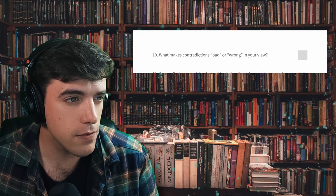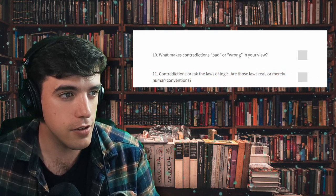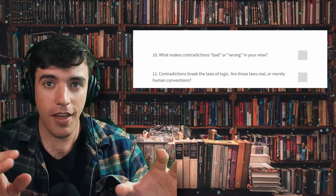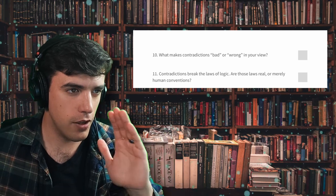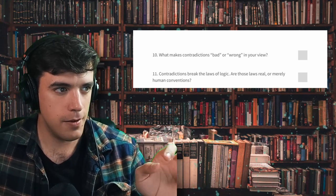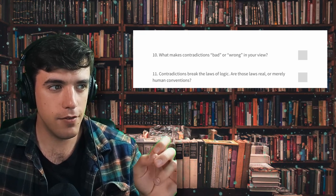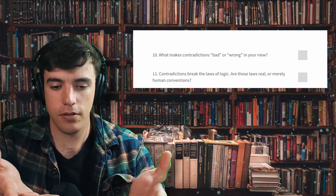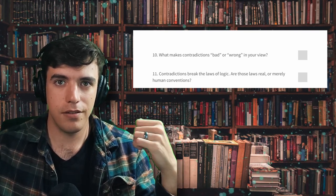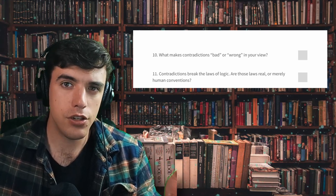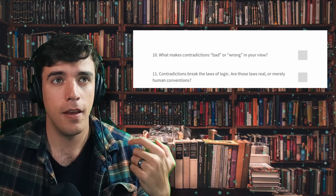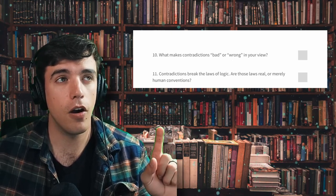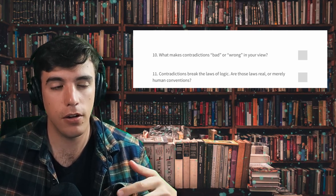11. Contradictions break the laws of logic. Are those real or merely human conventions? So this one flips this whole conversation on its head. We started by talking about contradictions with somebody, and then you just go, I guess this is something that's good for a relativist. Contradictions break the laws of logic. Are those laws real or merely human conventions? Because if it's just a human convention, then who cares? Somebody else could create separate laws of logic, and it's different from mine, but they're both equally valid, and who cares? But if they're actually real laws of logic, this is similar to the moral argument for God. If there are logical laws that are really real, they have to have a law giver in the same way as if there are moral laws that are really real, they have to have a moral law giver. And we'd say that that is God.